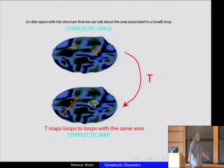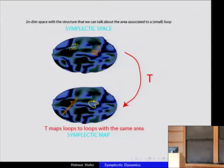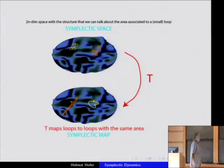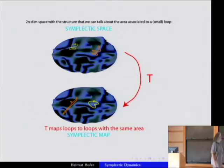You can take this and ask: can you put a structure there without colliding with topology? You want to associate an invariant to small, tiny loops. If you can do that in some consistent way, that's a symplectic space. You would say: a smooth manifold with a non-degenerate closed two-form.